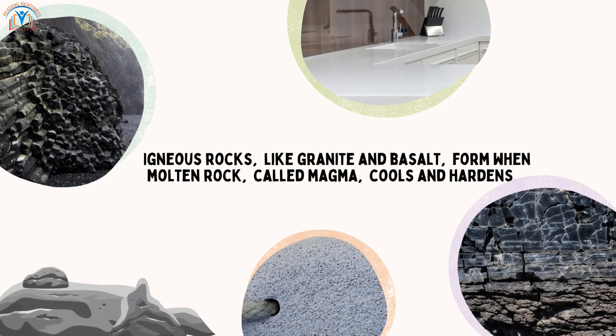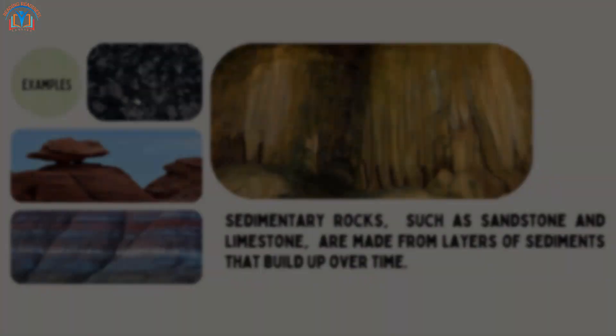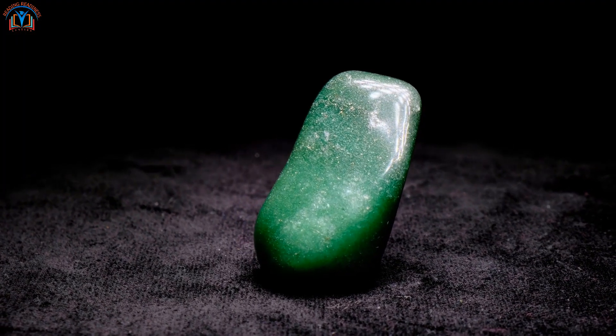Igneous rocks like granite and basalt form when molten rock called magma cools and hardens. Sedimentary rocks such as sandstone and limestone are made from layers of sediments that build up over time. Metamorphic rocks like marble and slate are created when heat and pressure change other rocks.